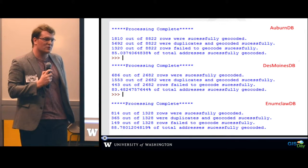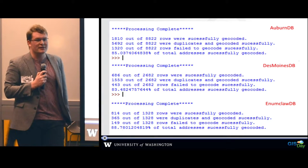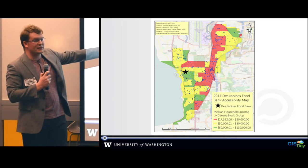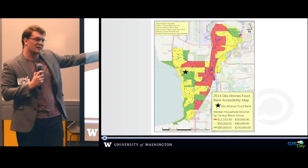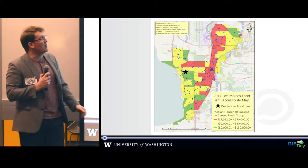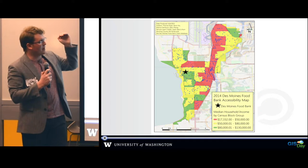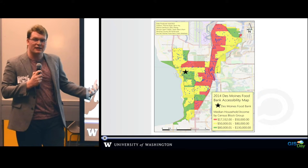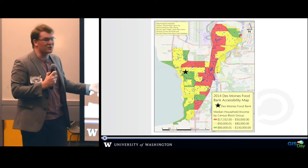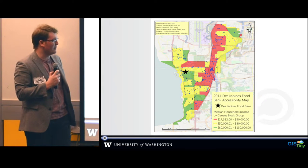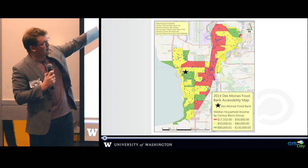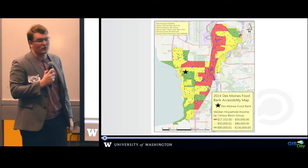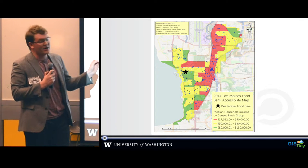The most difficult part of the project was working with the dataset from the food bank, because they did not have it set up so we could use it. This is the first map we generated, which is an accessibility map. Each dot represents a specific client of the food bank and their home address. We're showing that dots cover every single census block in the Des Moines service area, meaning the food bank is generally accessible to everyone in the area. We also looked at where likely users of the food bank were — along the SR 99 and Interstate 5 corridor — which is where we see the areas of lowest median household income.